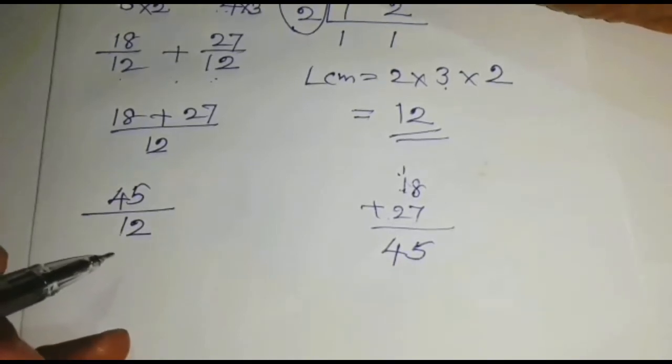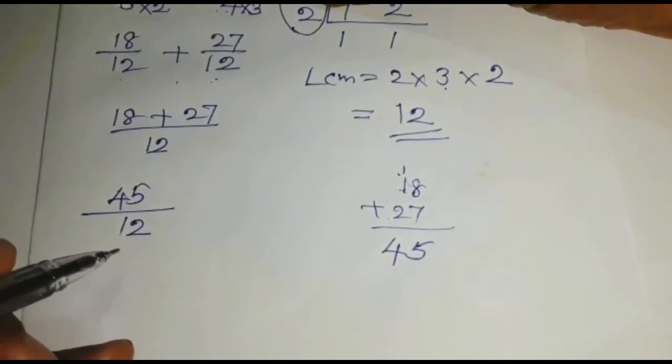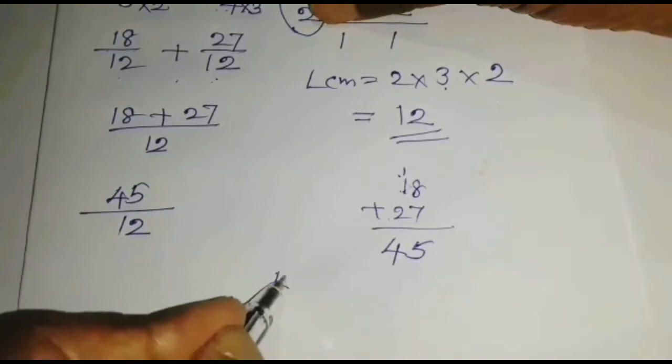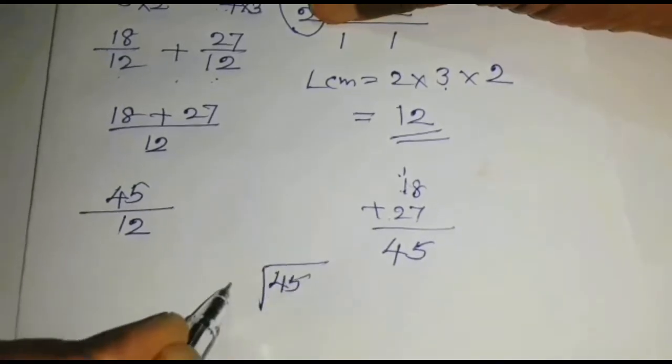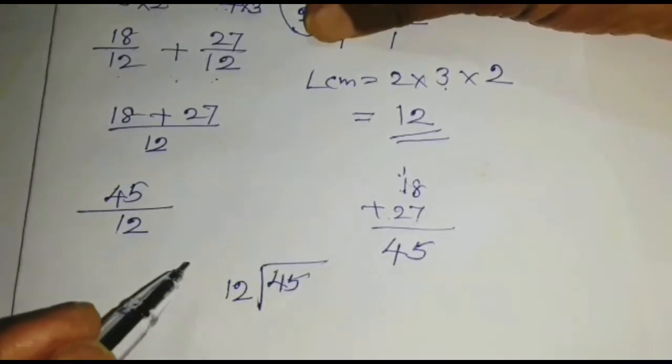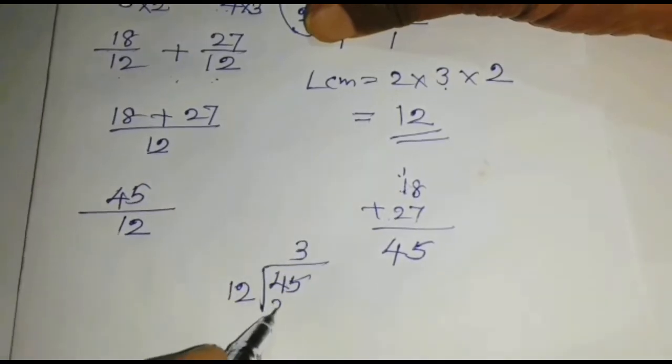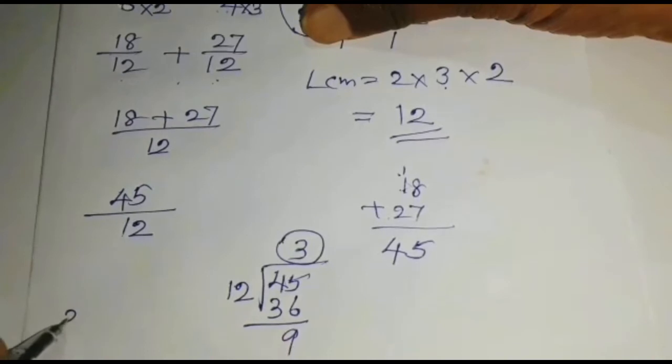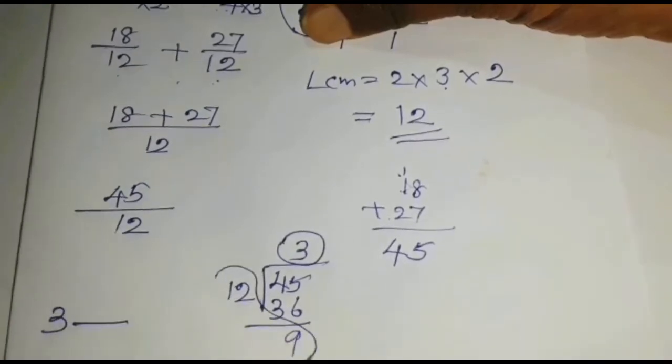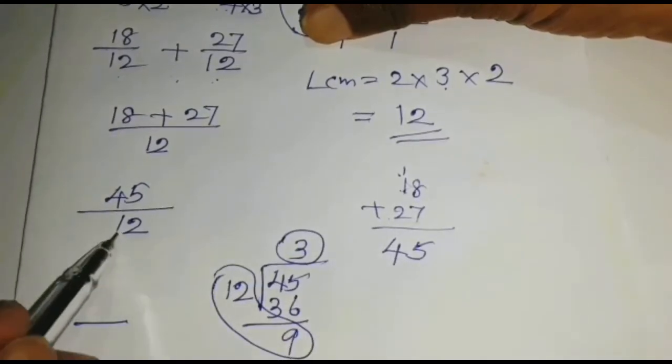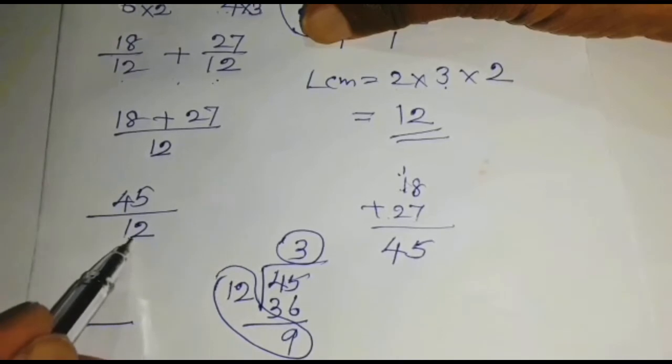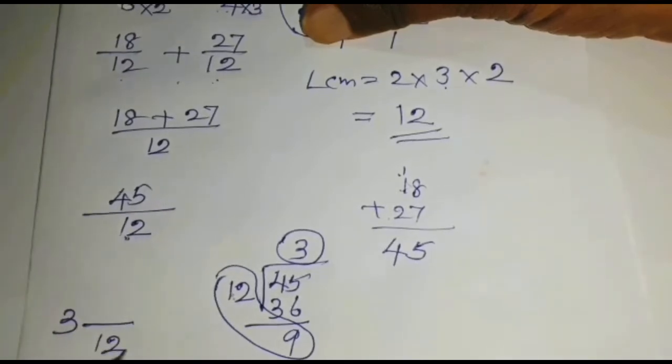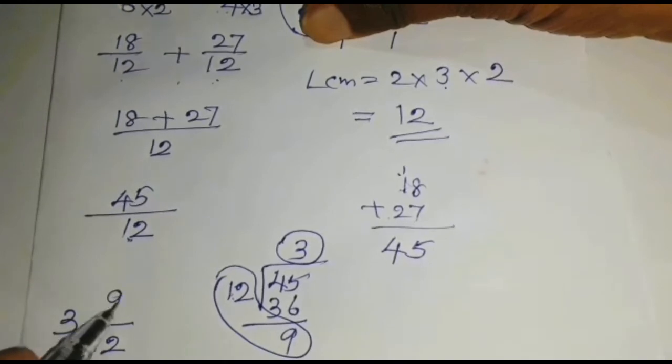45 over 12 is an improper fraction. So we have to divide 45 by 12. 12 into 3 is 36. Balance is 9. 3 is a whole number. These two are fractions. Here, in denominator is 12. So we can write this 12 also as a denominator. Numerator is 9.